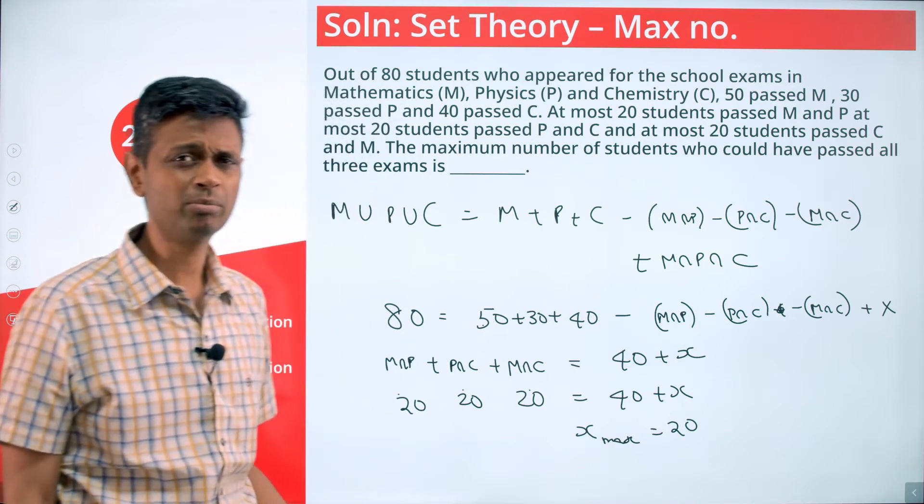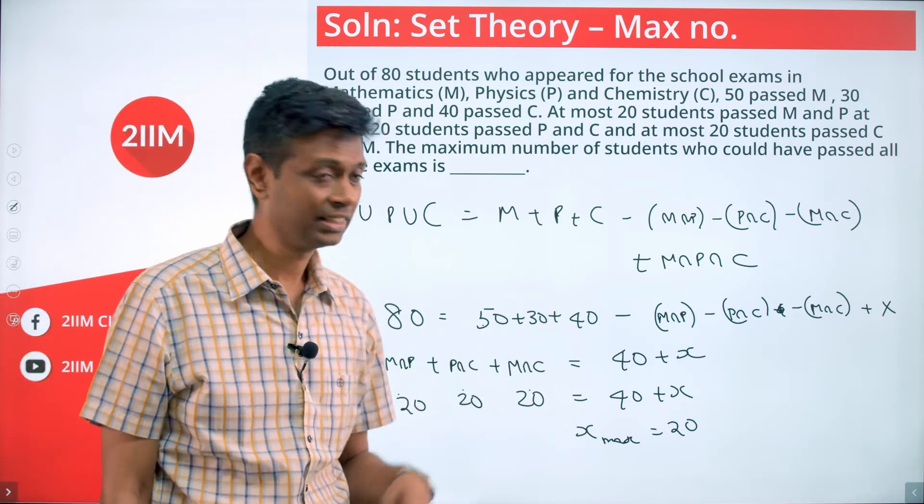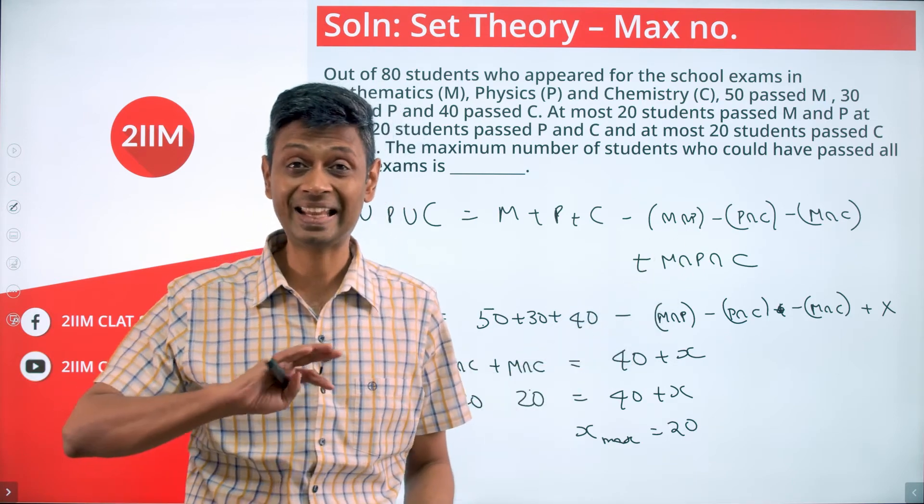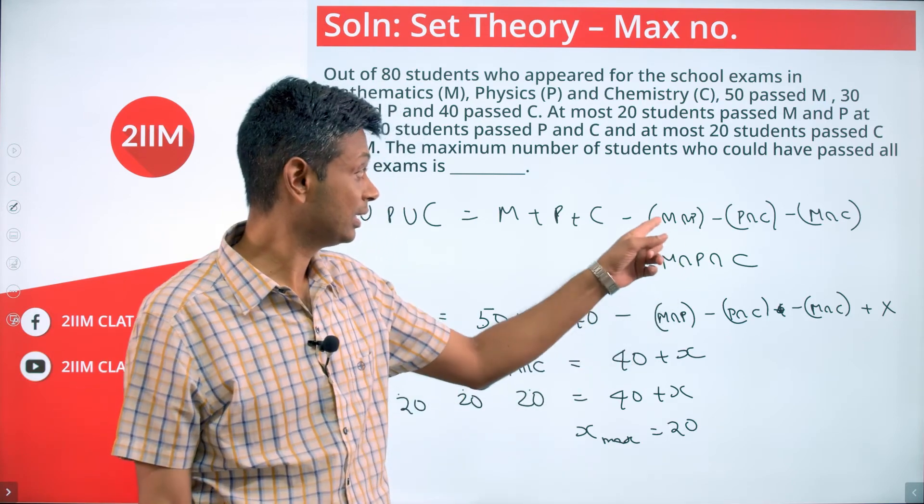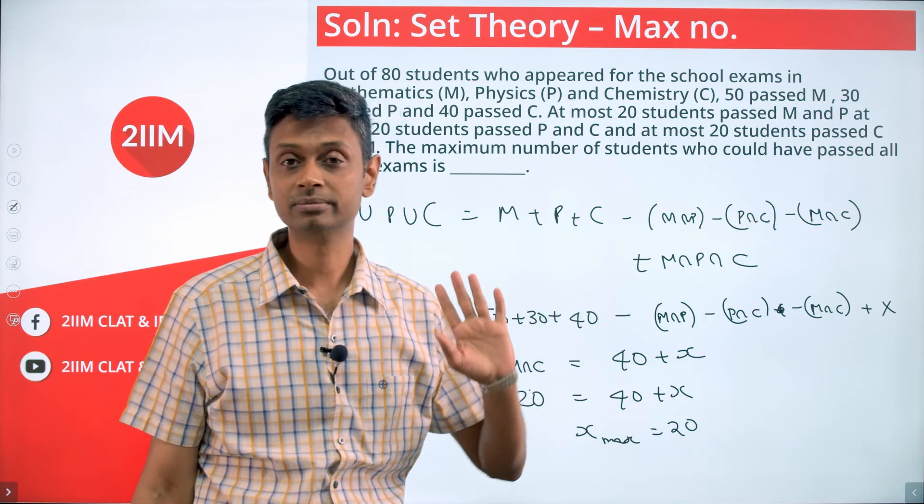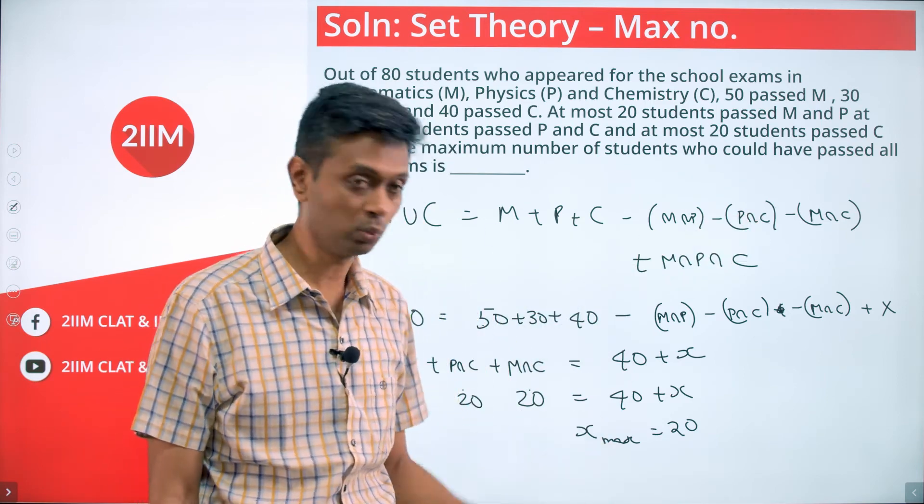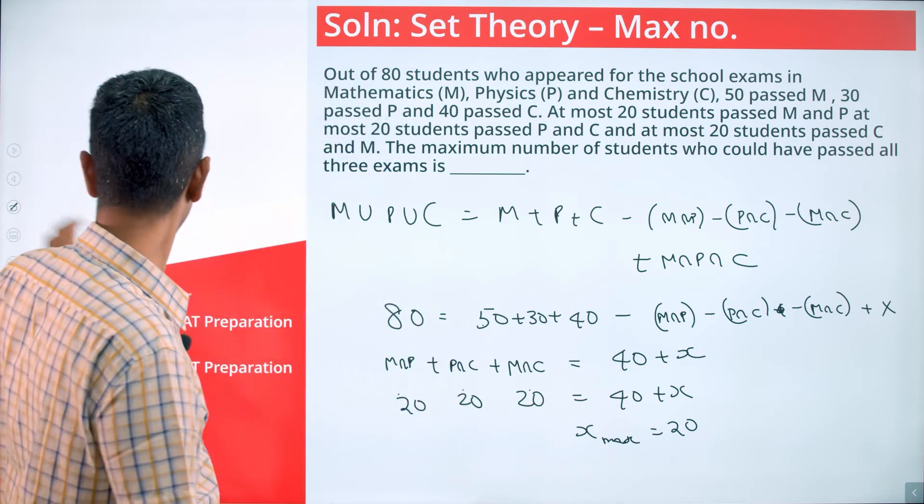The maximum possible value of x is 20. Remember that x is M intersection P intersection C. That cannot be higher than any of the pairwise intersections, and so 20 is the maximum it can take. It looks like 20 could work. I don't want to leave it at that - I want to plug in 20 and see if the diagram works.